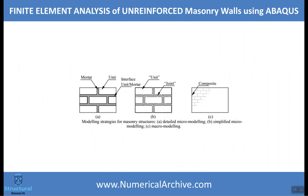The second method is simplified micro modeling, which has a lower computational cost. There is also a third method, which we call macro modeling. If done accurately, it produces the right results with the lowest computational cost compared to the other methods.